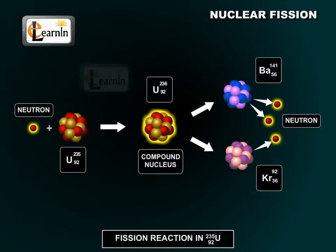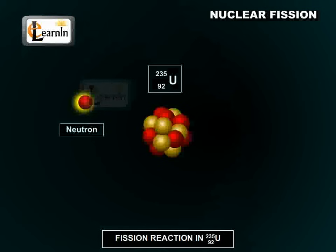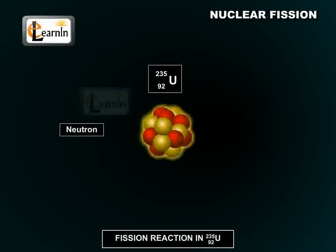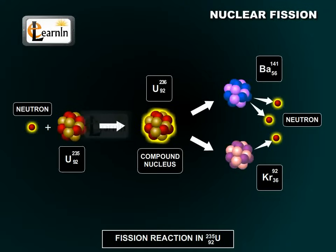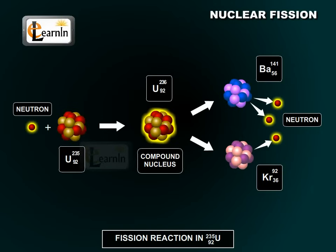In the process, uranium-235 initially absorbs a slow-moving neutron, thus forming a highly unstable compound nucleus, uranium-236. This is what triggers the nuclear reaction.